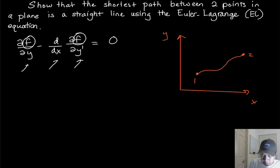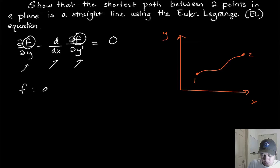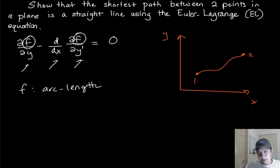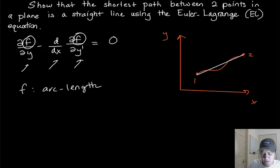So what is the F that describes that? Well, F is going to be a function that describes the arc length essentially. So F is going to be like an arc length. And we're going to show that the F that minimizes the arc length between these two points is going to be a straight line. That's essentially what we're going to show.